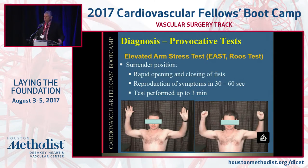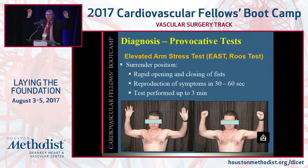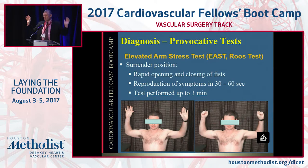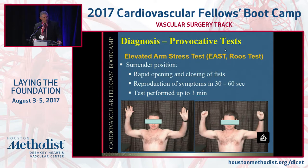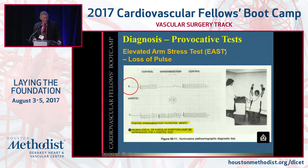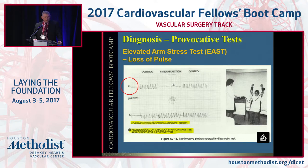You can also do the ROOS or EAST test — the elevated arm stress test — which is the surrender position where opening and closing their hands can make them white or reproduce their symptoms. Most people should be able to hold their arms up for three minutes without dropping. If they begin to drop, there could be arterial ischemia and muscle weakness. If you do plethysmography of the radial artery, you'll see loss of pulse on the right, which would indicate positive compression in the costoclavicular space.